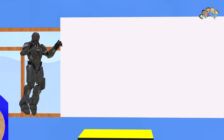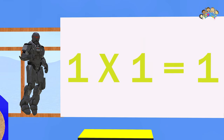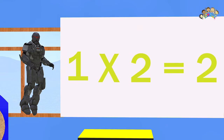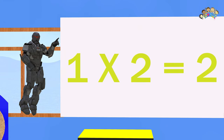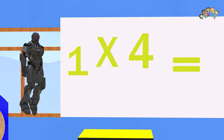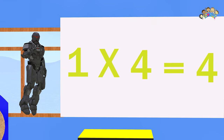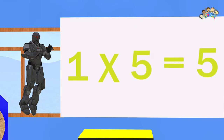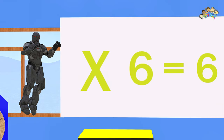Next, let's try some multiplication. One times one equals one. One times two equals two. One times three equals three. One times four equals four. One times five equals five. One times six equals six.